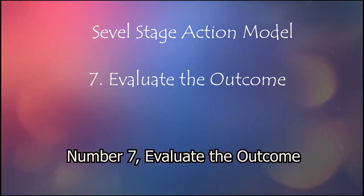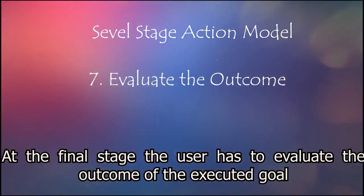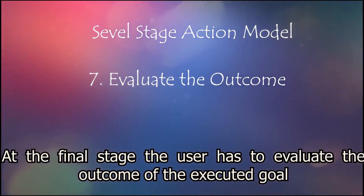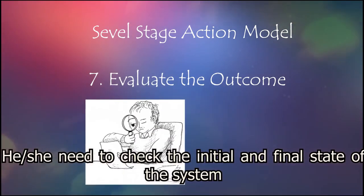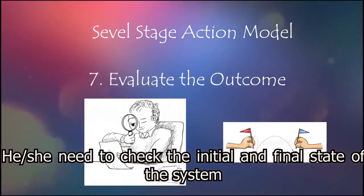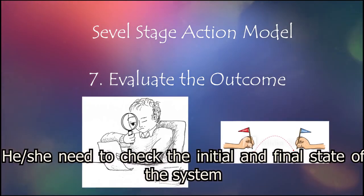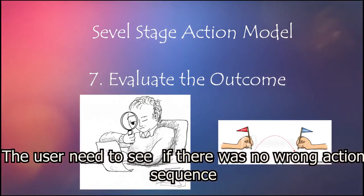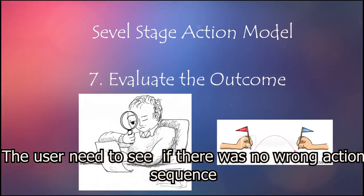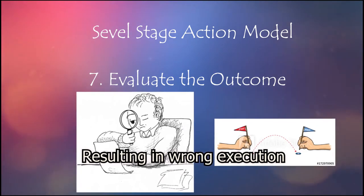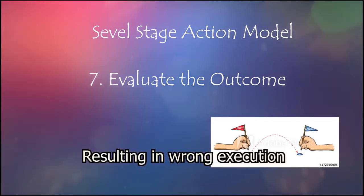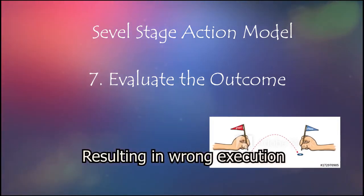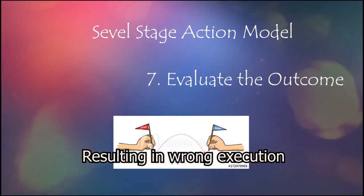Number 7: Evaluate the outcome. At the final stage, the user has to evaluate the outcome of the executed goal. They need to check the initial and final state of the system and see if there was no wrong action sequence resulting in wrong execution. If the outcome is as expected, then the series of actions was a success.